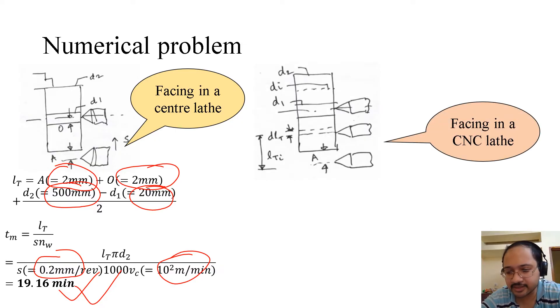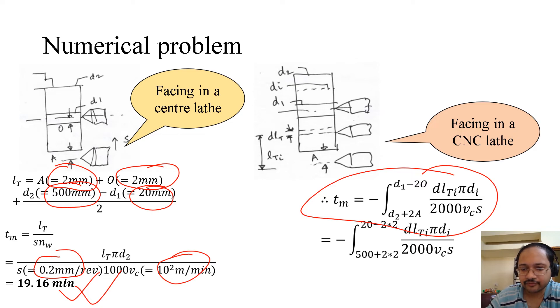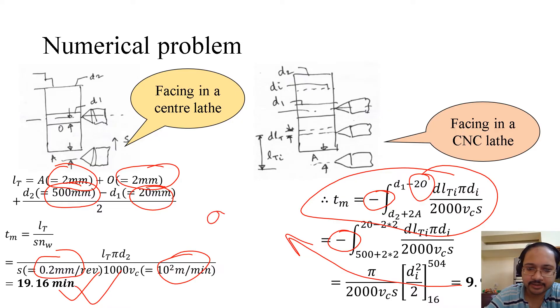Coming to facing in a CNC lathe, we have seen this expression. If we now put the values, the lower one D2 plus 2A is 500 plus 2 times 2, that is twice the approach. 20 minus 2 times 2, that is twice the over travel. Then there is a negative sign. Do not forget this negative sign because of which you finally get the answer as 9.96 minutes.